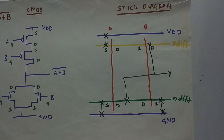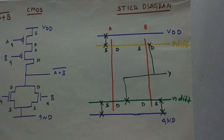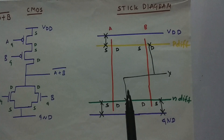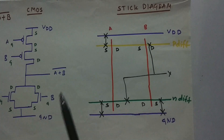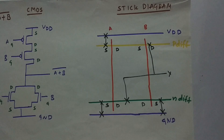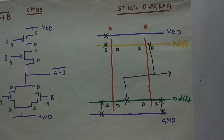This is the completed stick diagram for Y = (A + B)'. The most important thing is to first draw the CMOS circuit diagram correctly. If you can't draw CMOS correctly you can't proceed to the stick diagram. Also, don't forget to label the source and drain on the CMOS diagram — it makes drawing the stick diagram much easier.